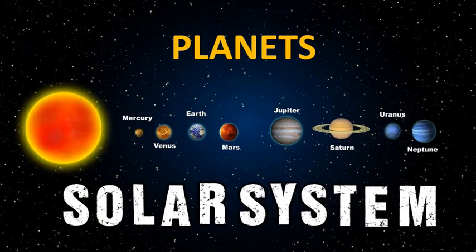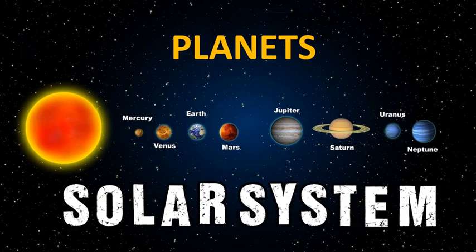Our solar system has eight planets which orbit the Sun. In order of the distance from the Sun, they are Mercury, Venus, Earth, Mars, Jupiter, Saturn, Uranus and Neptune. Pluto, which until recently was considered to be the ninth planet, is now classified as a dwarf planet.